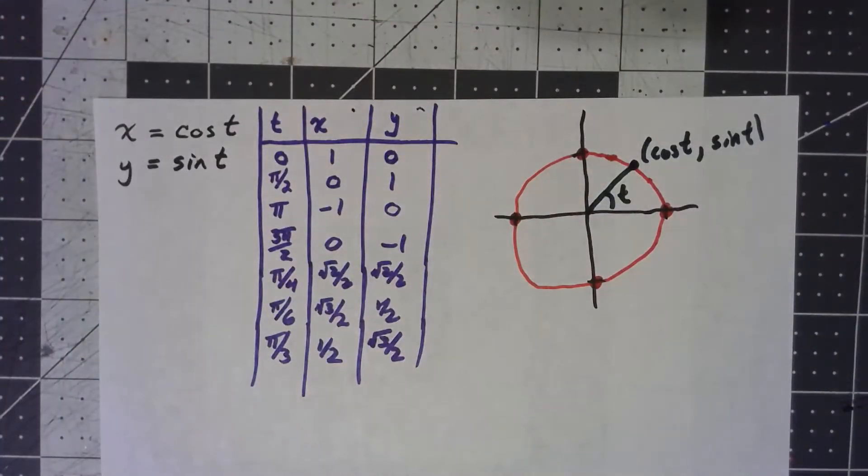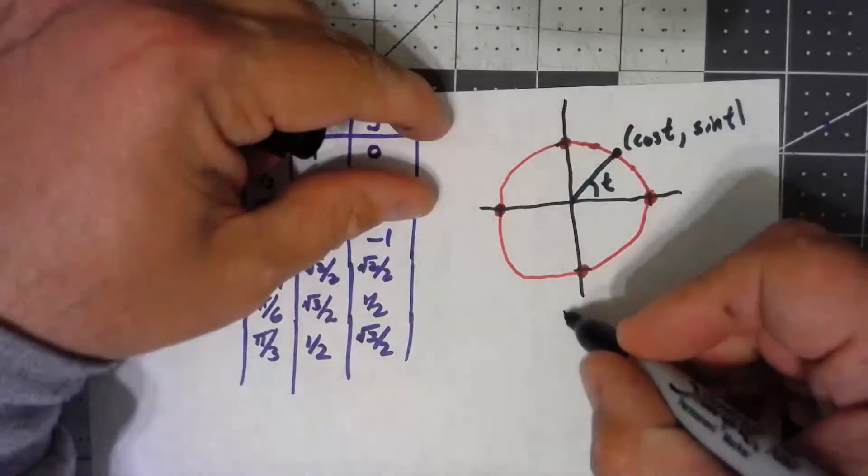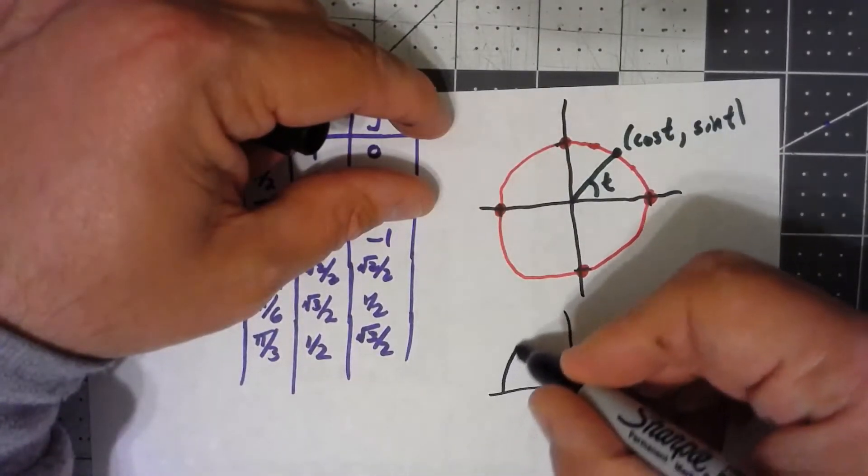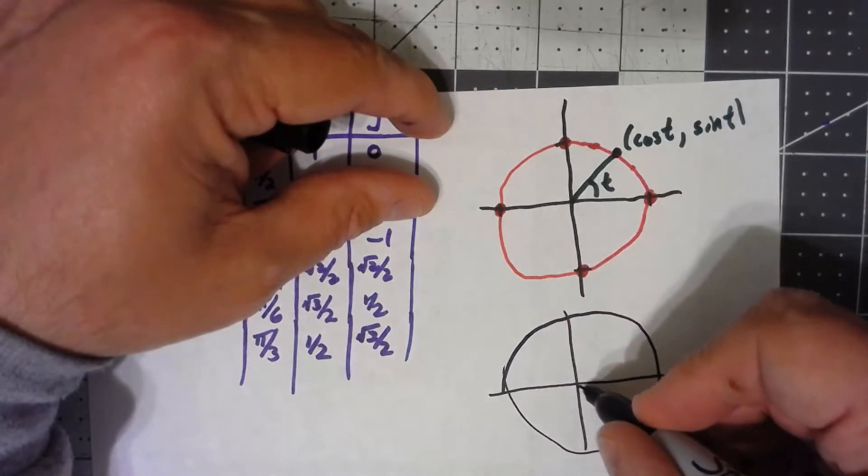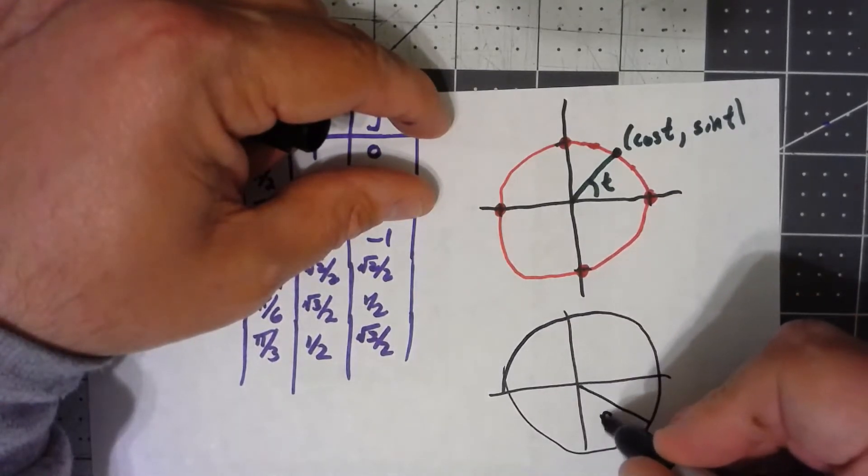What if the circle didn't have radius 1? Well, then, if I've got some bigger radius, or smaller radius for that matter, r.